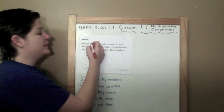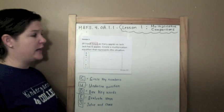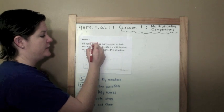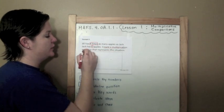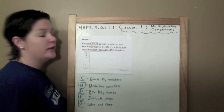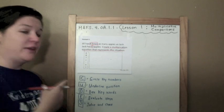Jill has eight times as many apples as Jack. Jack has six apples. Create a multiplication equation—there we go again—that represents this situation.